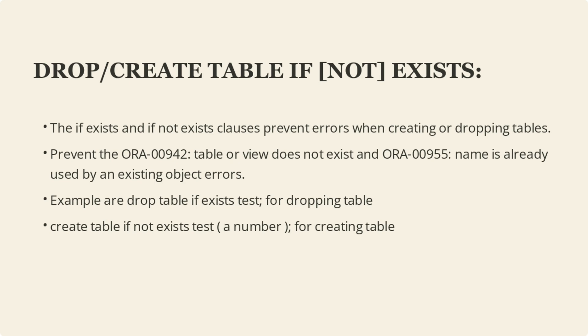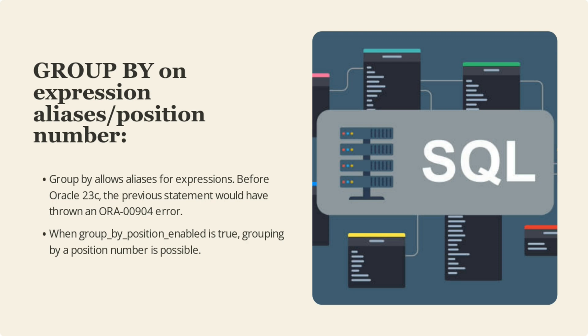In Oracle 23c, the GROUP BY clause now allows aliases for expressions, which was not possible in previous versions. This means aliases can be used for expressions in GROUP BY without encountering an ORA-00904 error. Additionally, when the group_by_position_enabled parameter is set to TRUE, it becomes possible to group by a position number, providing more flexibility and ease of use.